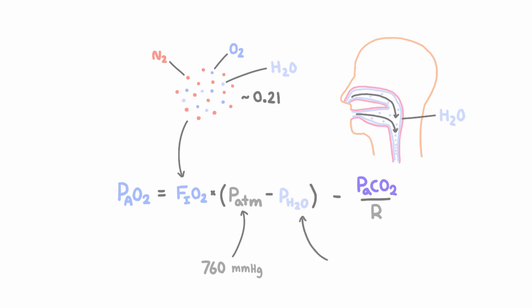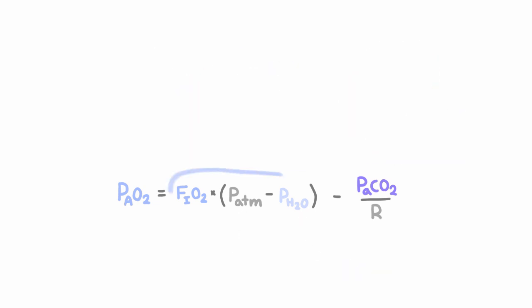And the water vapor at body temperature is around 47 millimeters of mercury. So this whole first term then is the partial pressure of oxygen of air right before it enters the alveoli. And the second term is a clever, indirect way to represent the amount of oxygen that's then taken out of the alveolus and consumed.